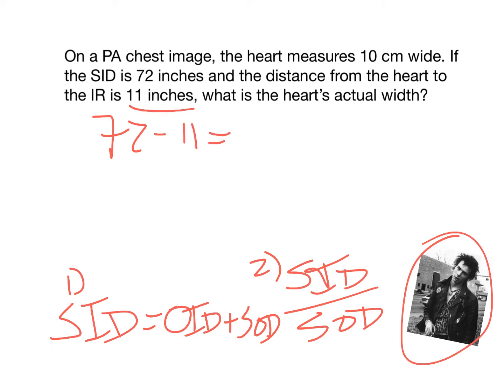So that gives me, I believe, a 61, right? And then I'm going to divide 72 by 61, and that's just working the magnification formula here. So that's SID divided by the SAD, and that's going to be 1.18, and that is sometimes what's referred to as a magnification factor.